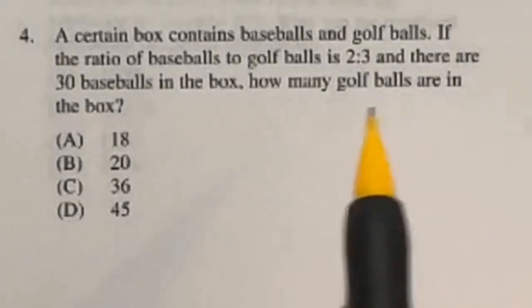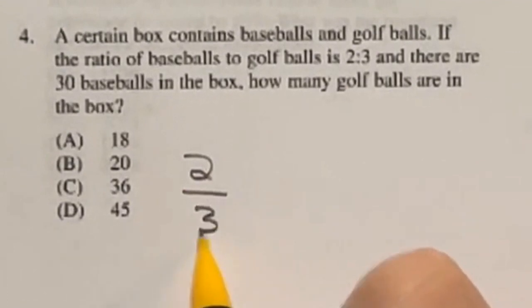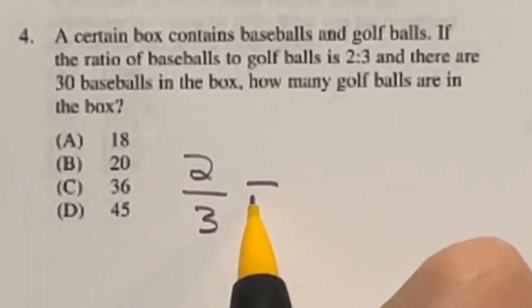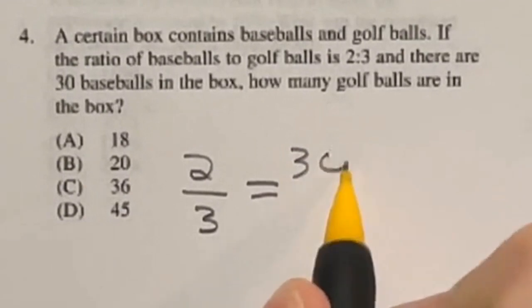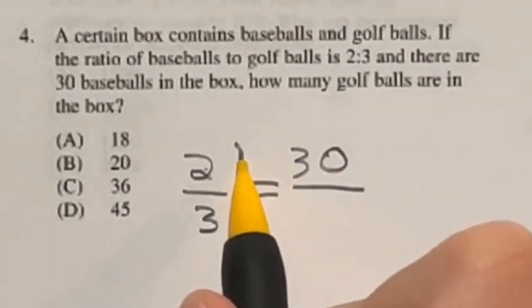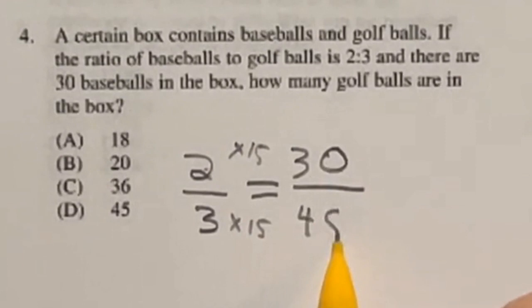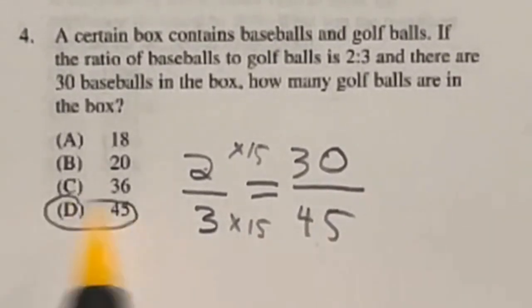Number four is a ratio game. If I have two baseballs for every three golf balls, how many golf balls would I have if I had 30 baseballs? Well, in this case, to go from two to 30, we multiplied by 15, meaning we multiply the bottom by 15 as well, giving me 30 over 45. That means that our answer here is D.